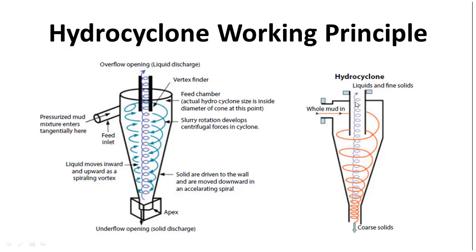The interesting thing about hydrocyclones is that they have no moving parts. There is nothing to physically scrape the solid from the inner wall — no spring or mechanical force. It is only the fluid movement and gravity which bring the solid from the inner wall of the cone downward, and the solid exits from the underflow or apex. It is only the fluid pressure and this spiral movement of the fluid that enforces rotary motion inside the cone and creates the centrifugal force.